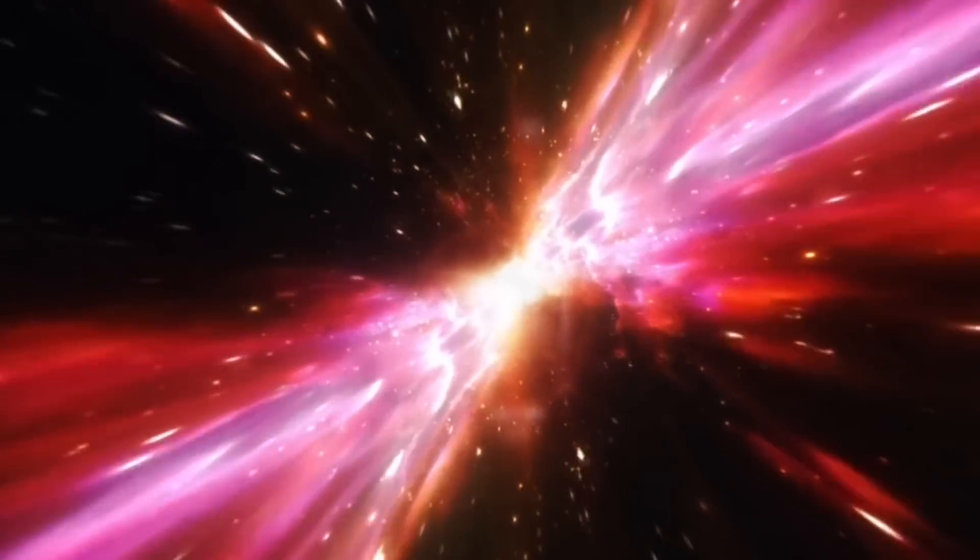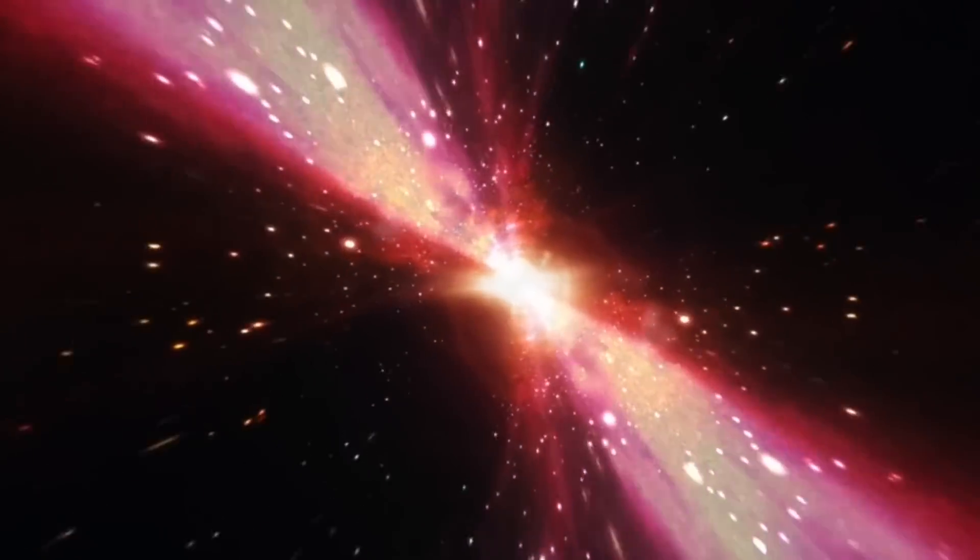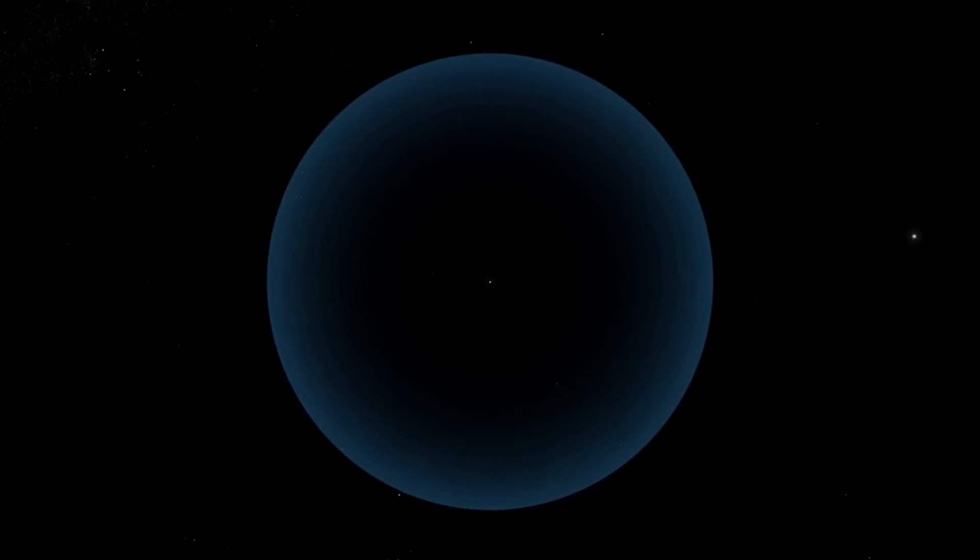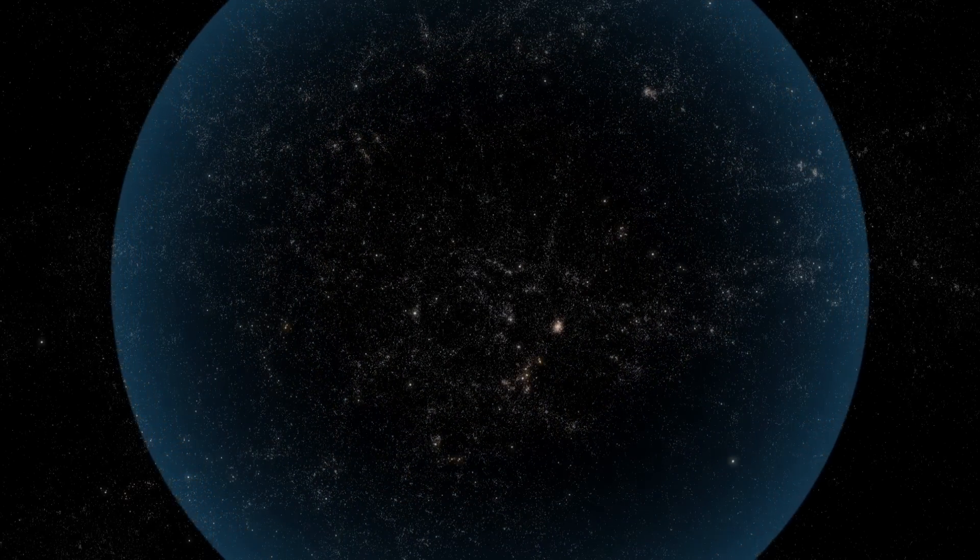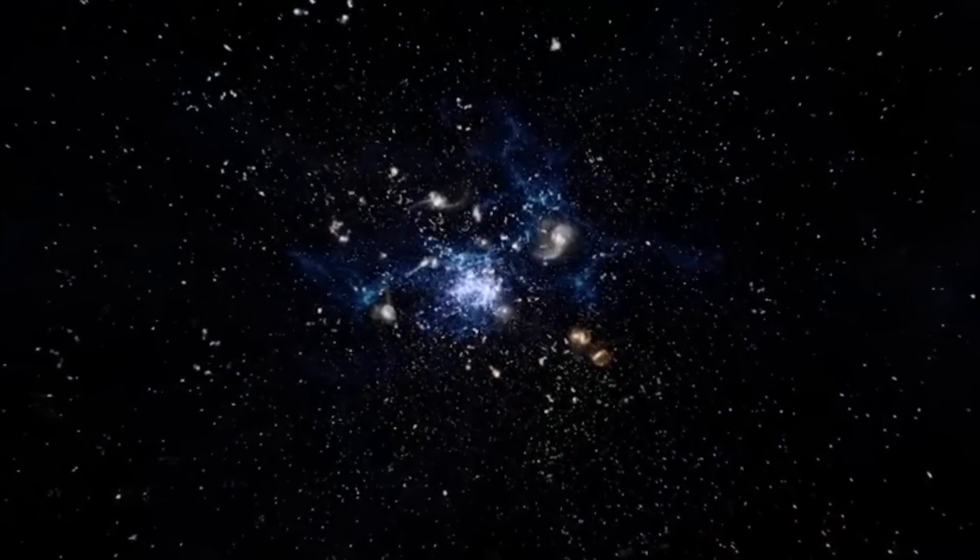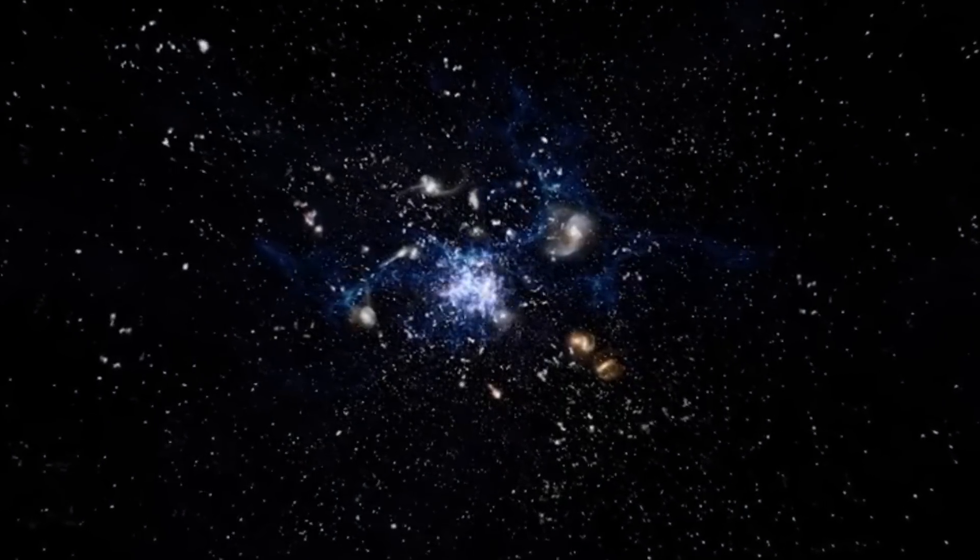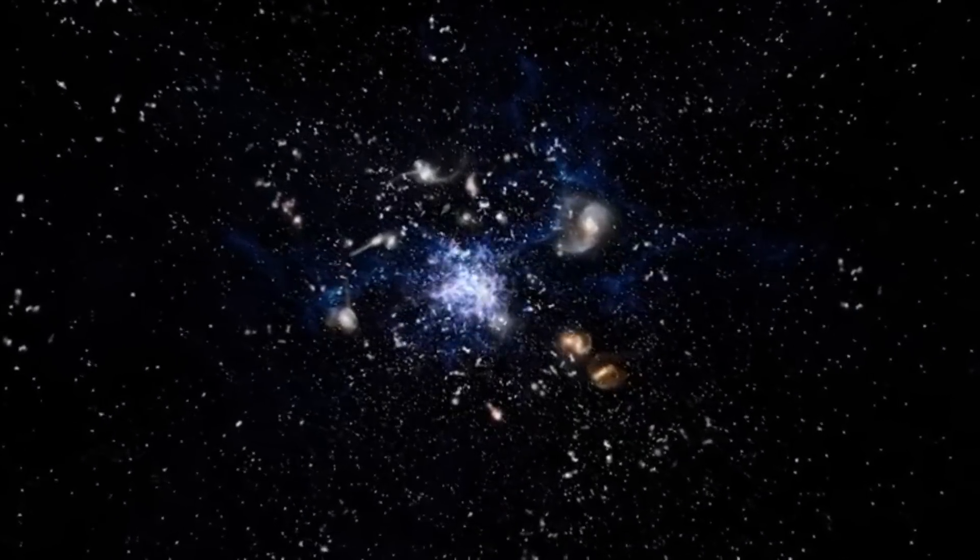The farther we look, the farther back in time we see, and eventually, we reach a point where we can no longer see anything. This point is known as the cosmic microwave background, which is the oldest light in the universe, left over from the moment when the universe was only 380,000 years old. Beyond the CMB lies the so-called edge of the universe, beyond which we cannot see, and therefore cannot observe or study.